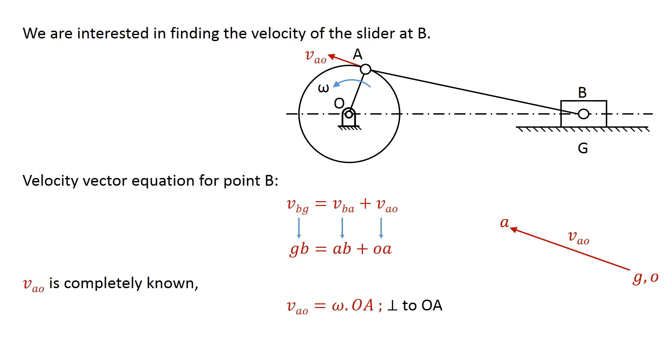The velocity of B relative to A is not known. But AB being a rigid link, B can't move relative to A along the link AB. Therefore its velocity direction can only be perpendicular to the link AB. So in the velocity diagram, we draw a line through point A perpendicular to the link AB.